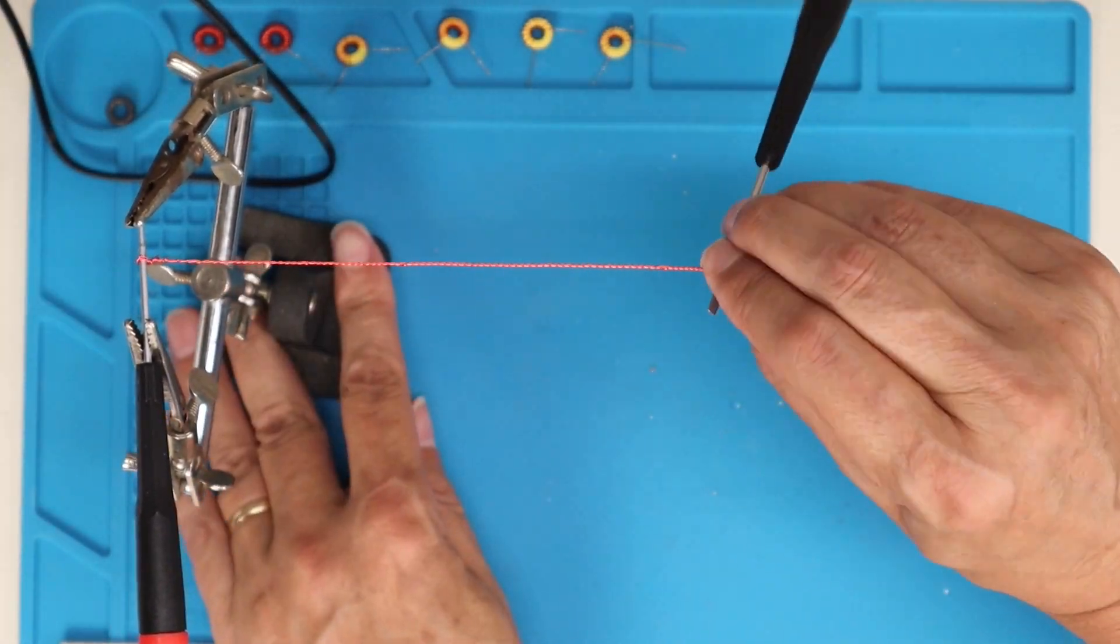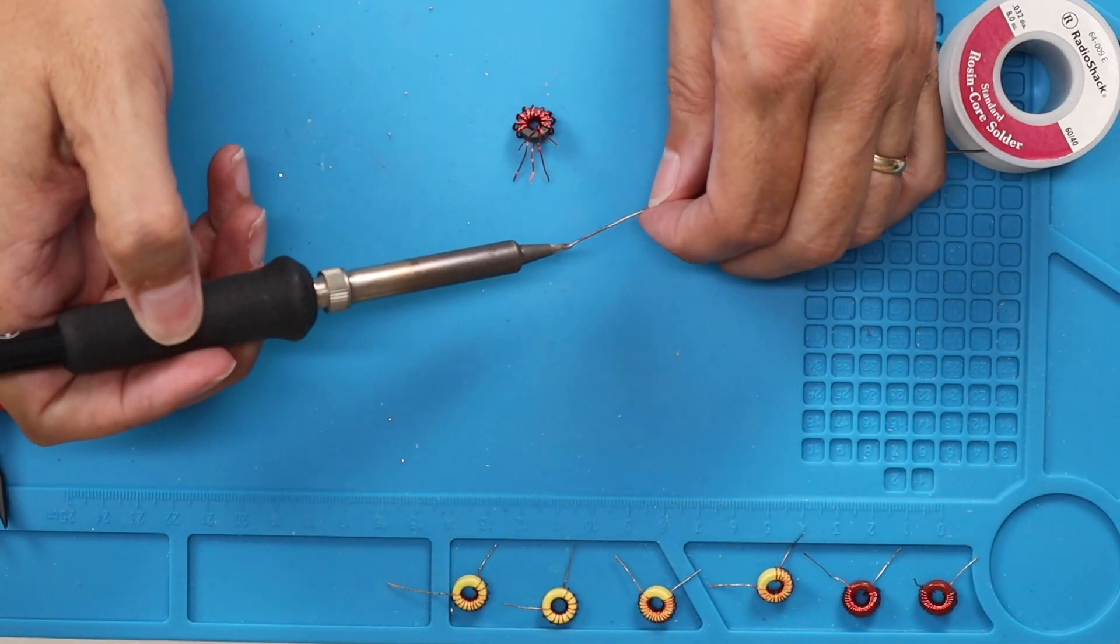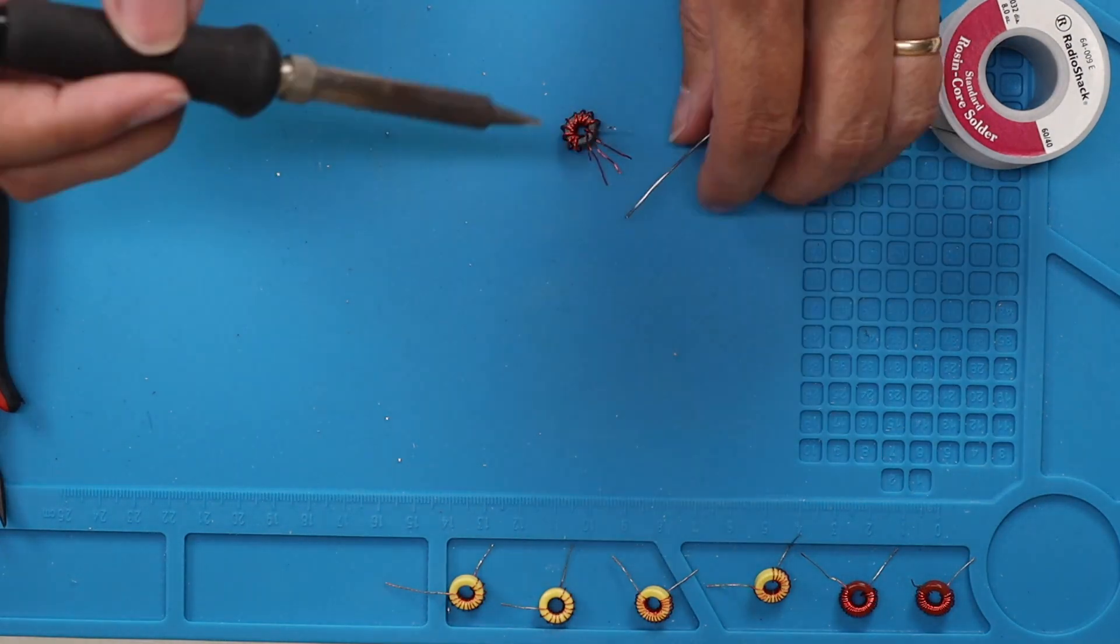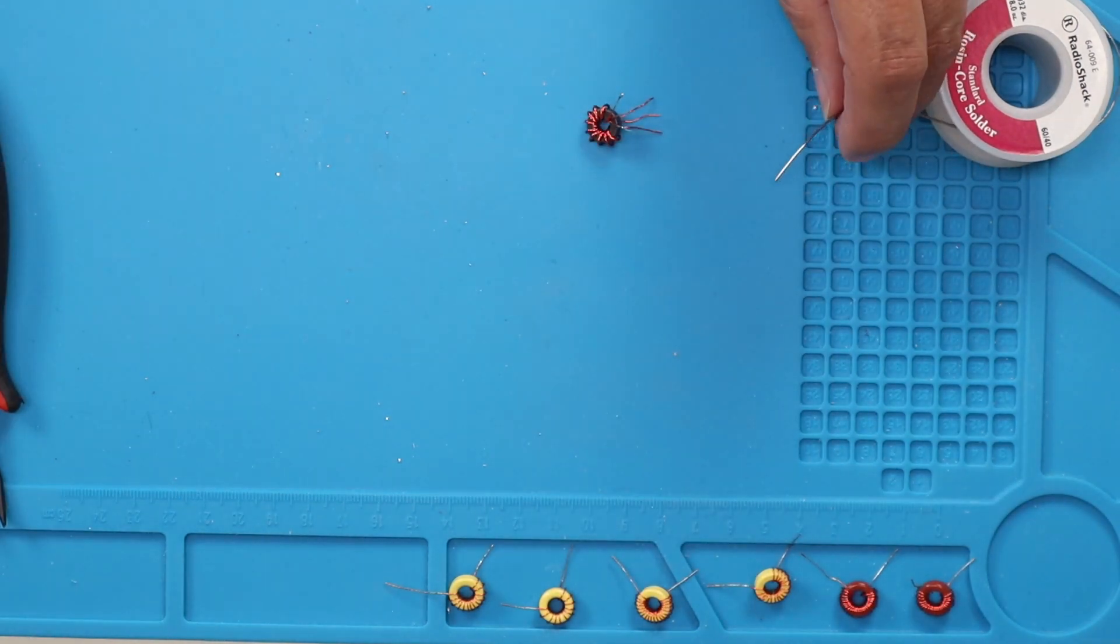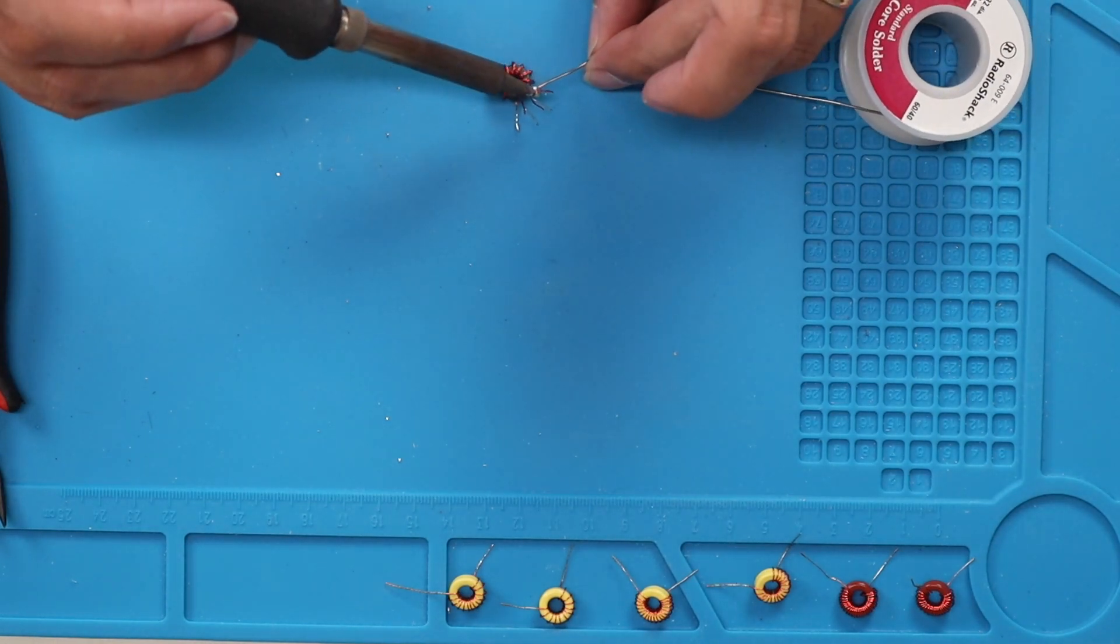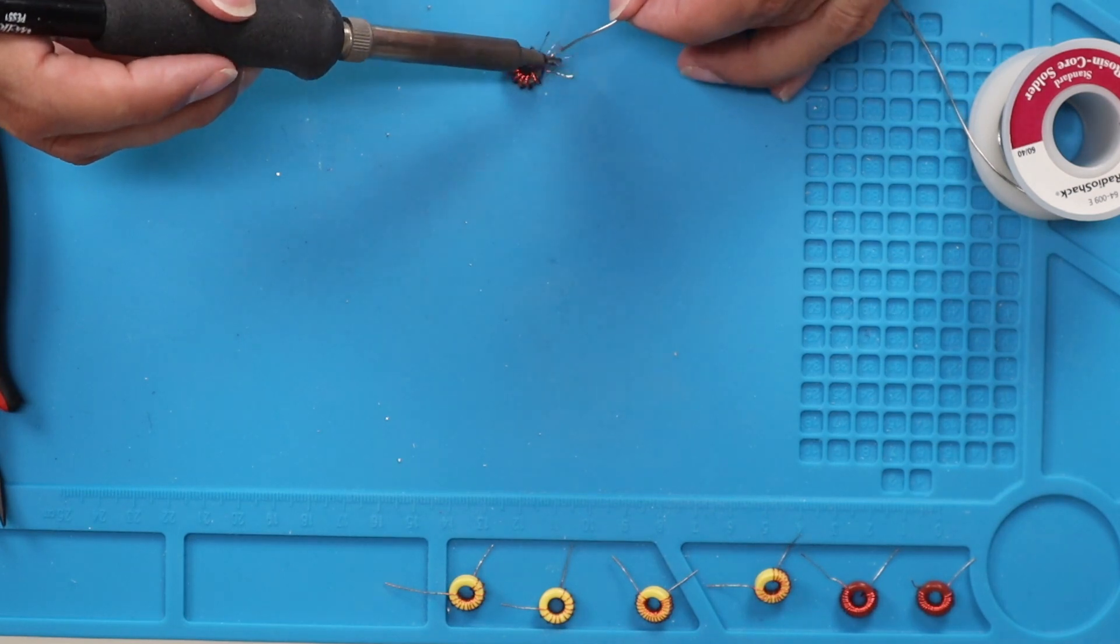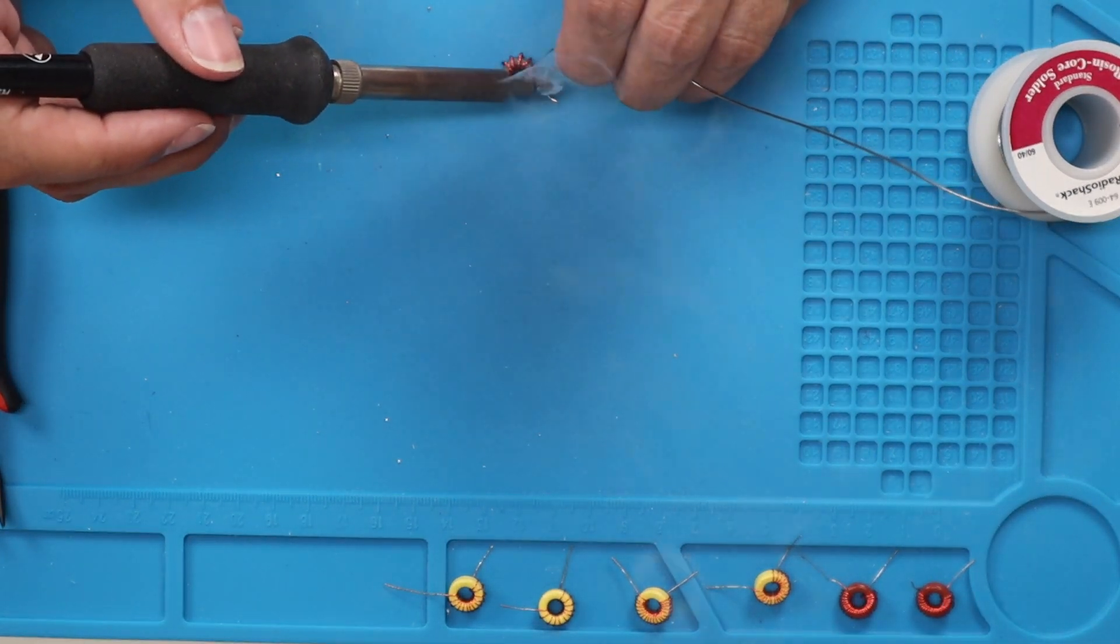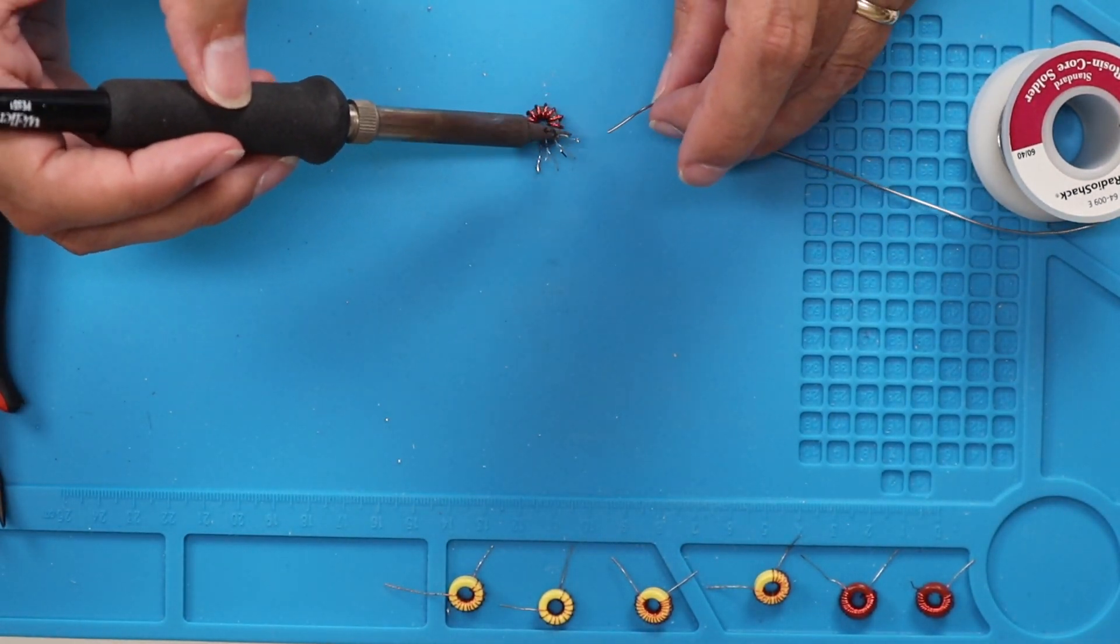They say it's not critical, the actual number of turns, but this will make up the tri-filler windings for T2. And you'll notice I've already wound this. Again, it's just 10 windings. It's like winding any other toroid other than it's three wires twisted together. Then what you need to do is you need to separate these out. And I'm tinning each one so that we can check and make sure that we have each of the individual wires aligned properly for soldering them to the board.